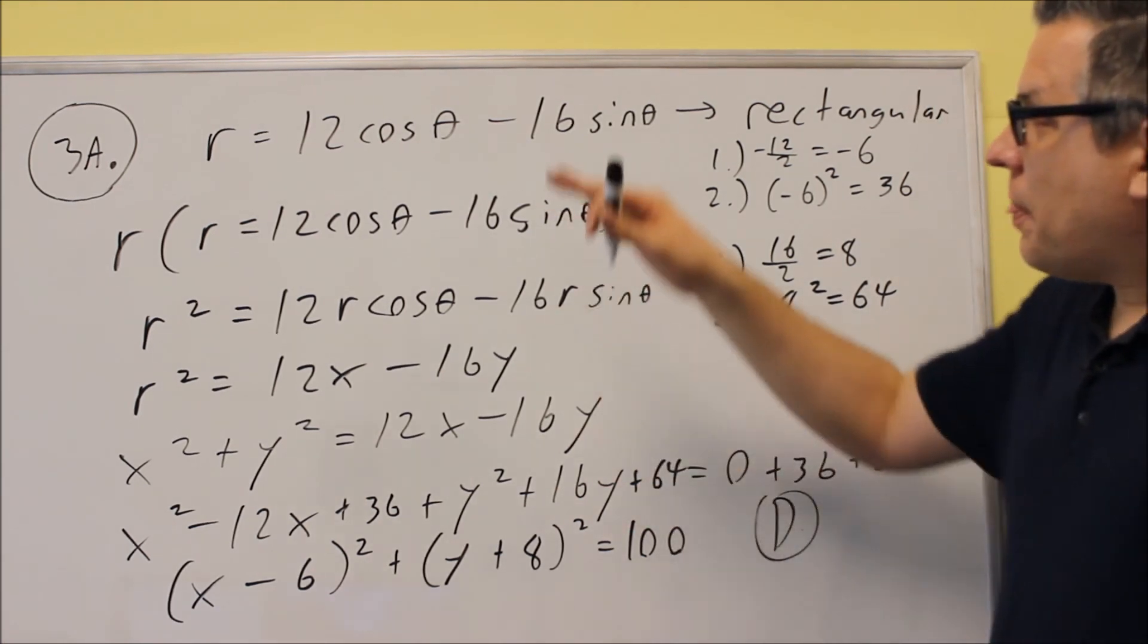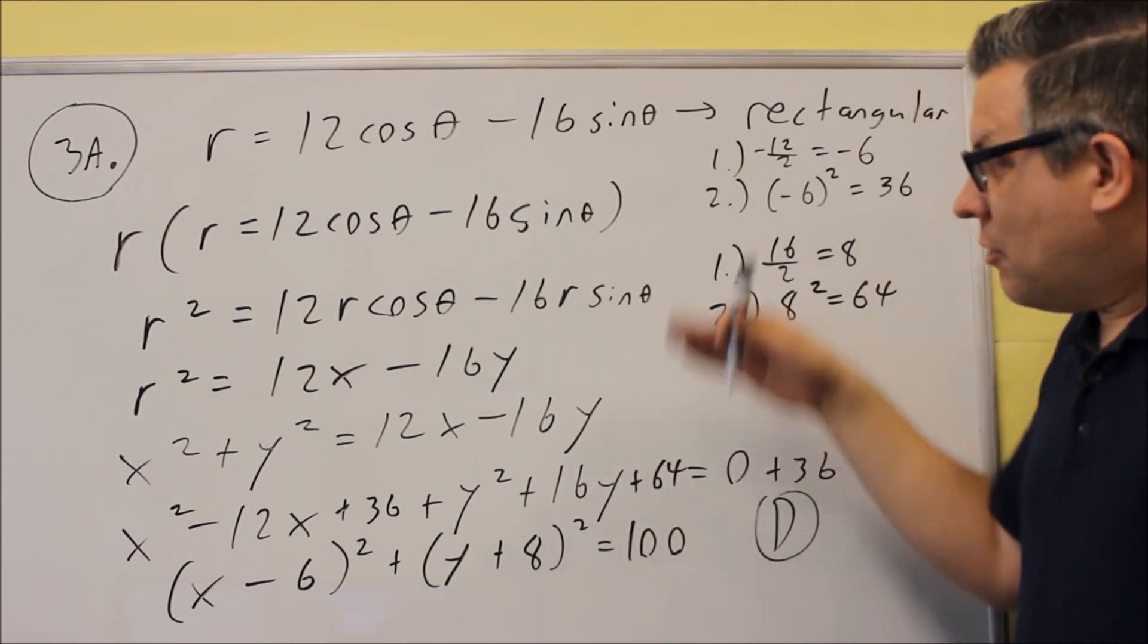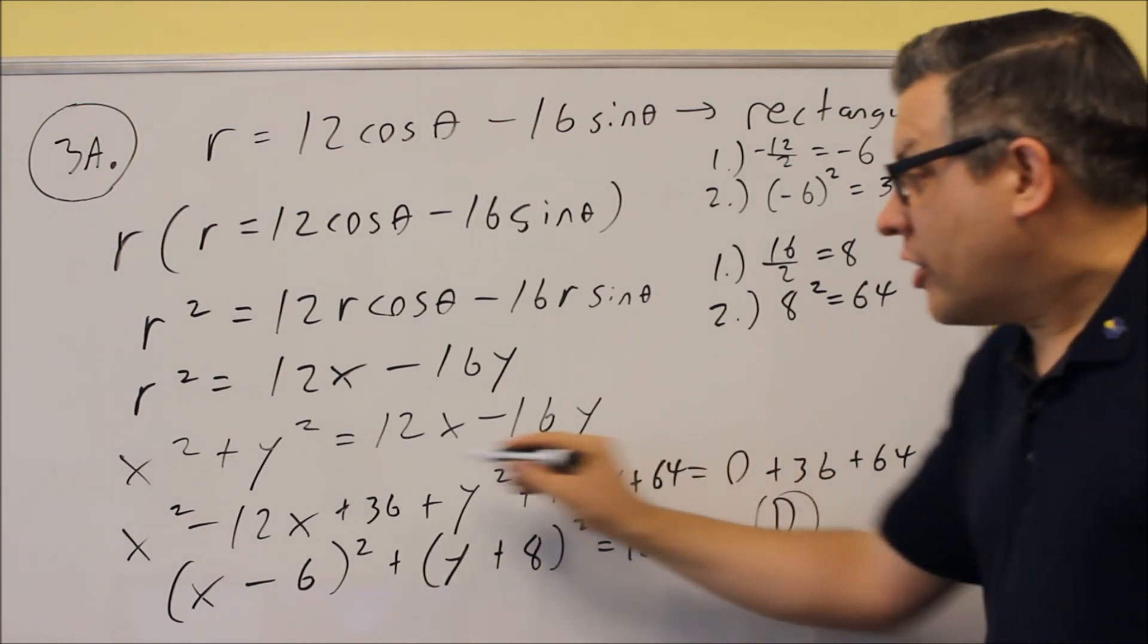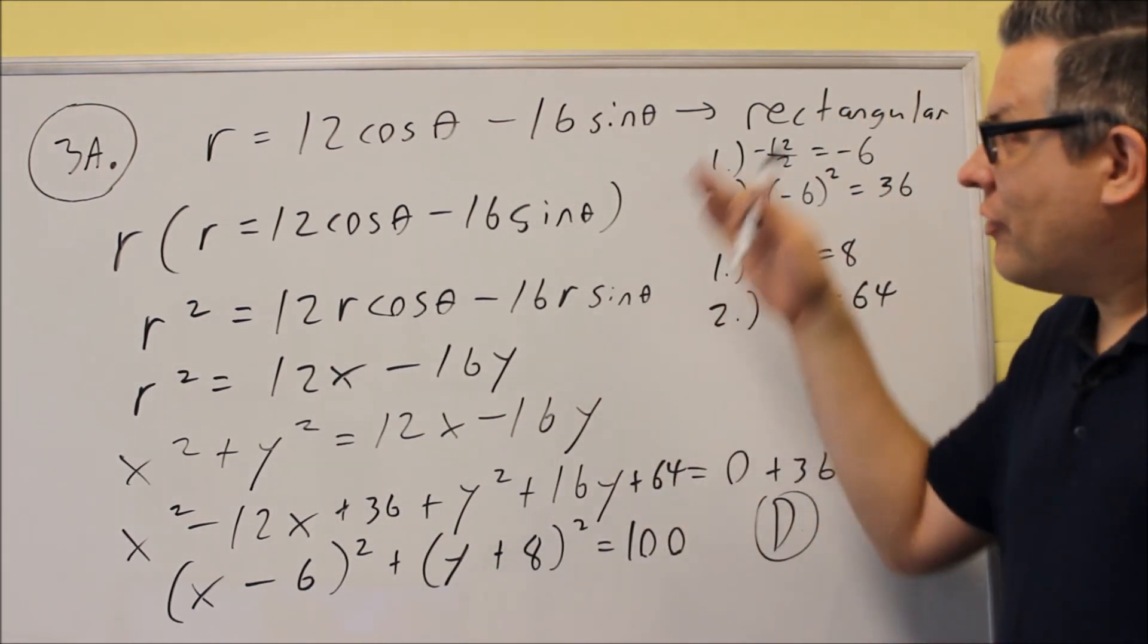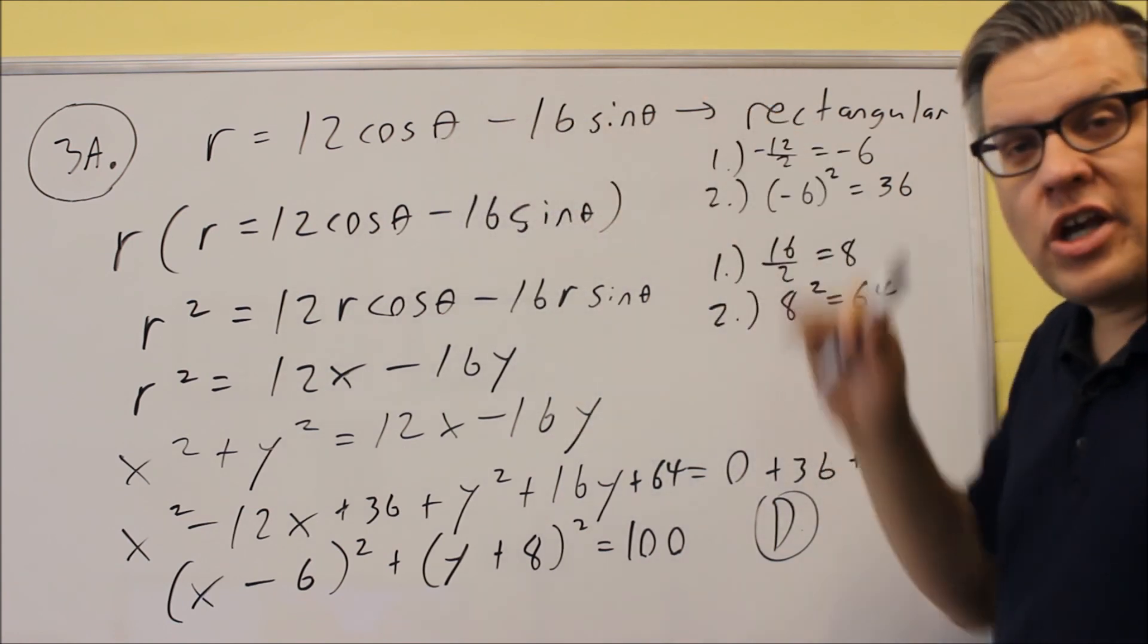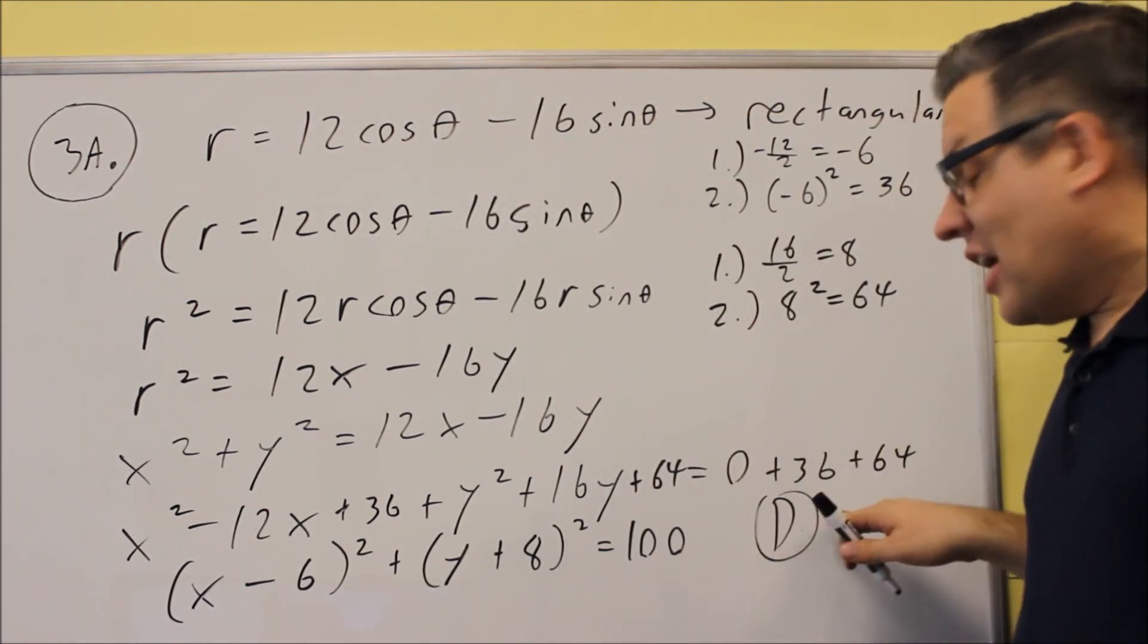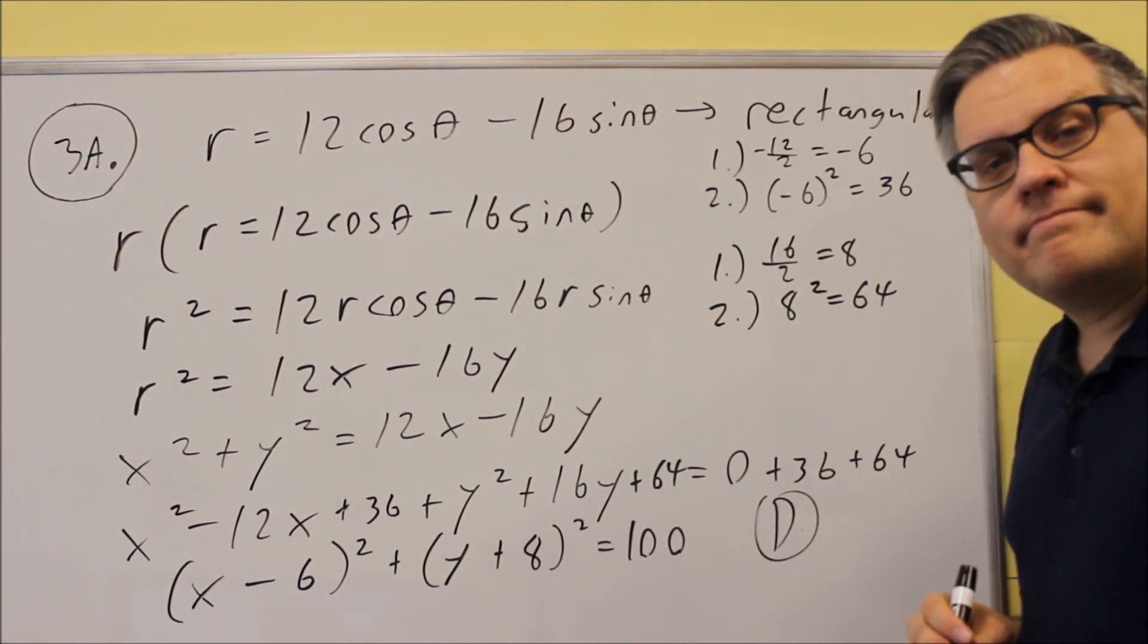So again, going from polar to rectangular, it's going to have to be given as a multiple choice. And the reason why for that is because there's a lot of different ways we could write our answers with x's and y's. So because of that, if I give you a question where I'm going from polar to rectangular, definitely it'll be multiple choice. But besides answering that, make sure you show your work as justification so you can get the full credit.